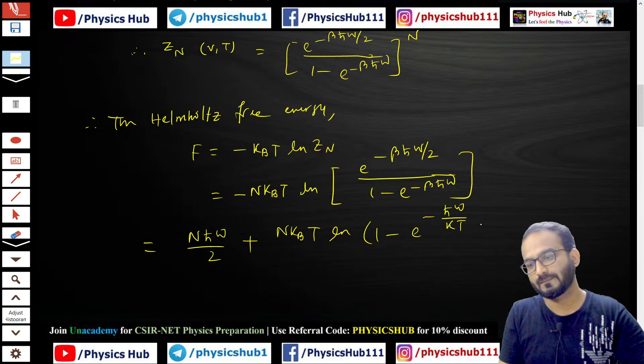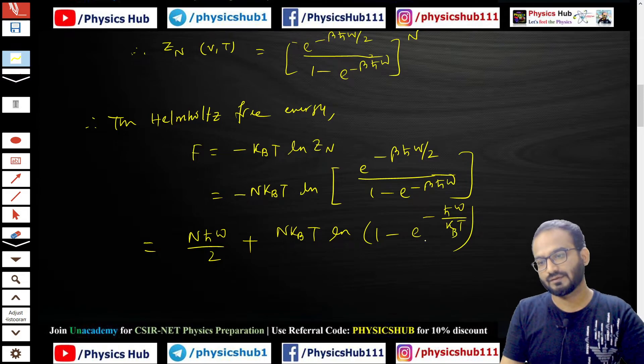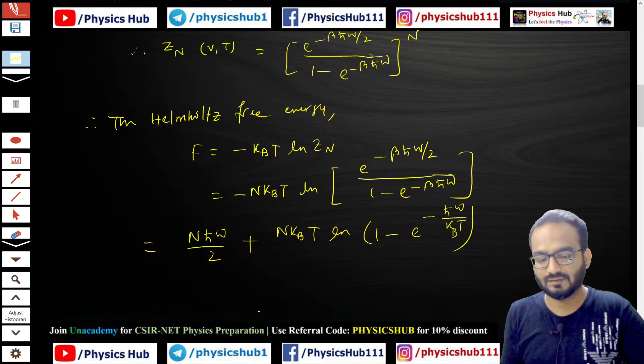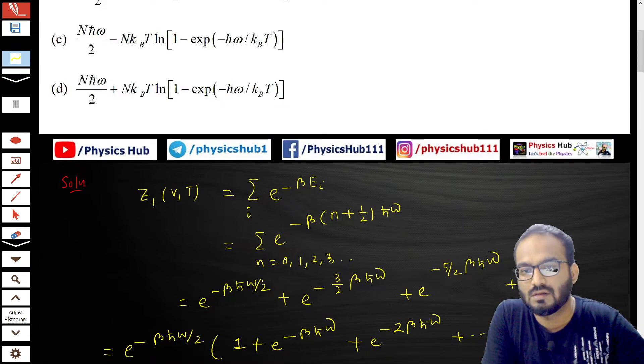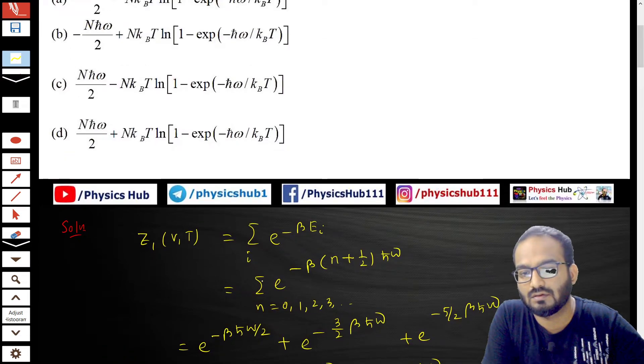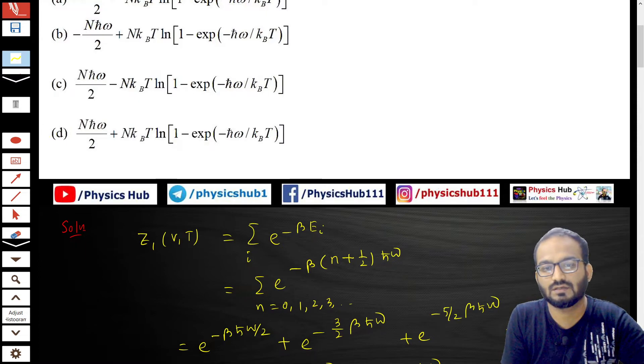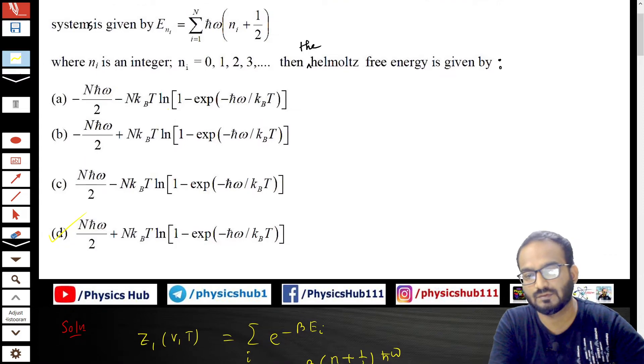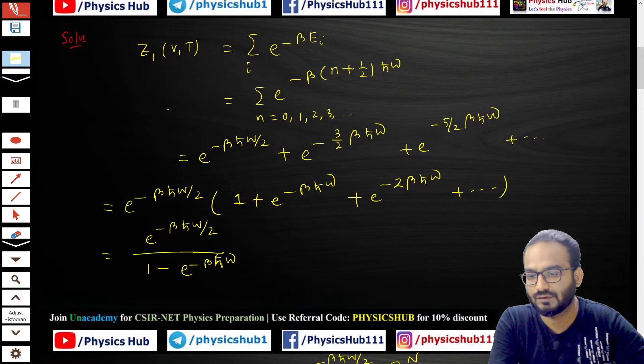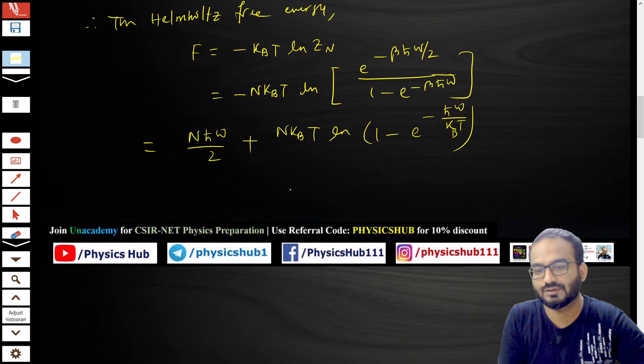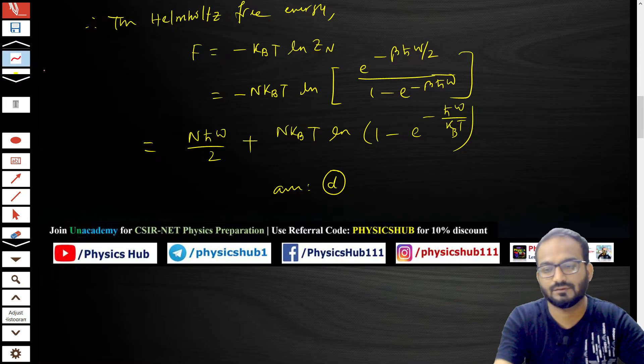Let's see if it matches any of the options. It's matching with option D: Nℏω/2 plus Nk_B T ln[1 minus exp(-ℏω/k_B T)]. So option D is the correct answer for this question. I hope you understood this solution very well. If you have any questions, let me know in the comment section.